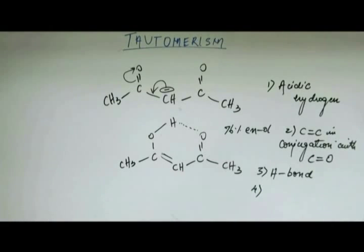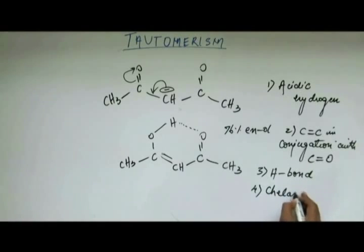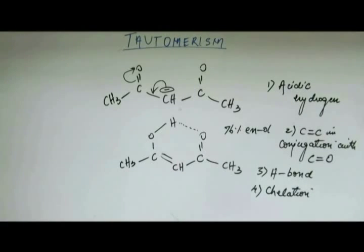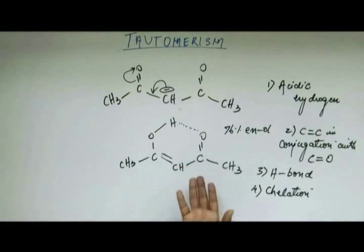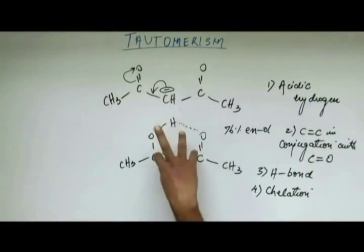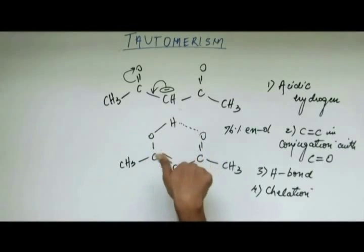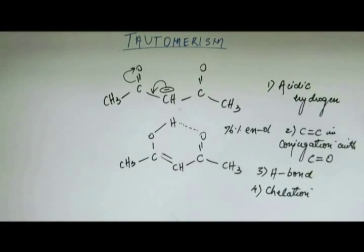The fourth thing we can see here is ring formation — there is chelation. If you've studied the chapter on coordination compounds in organic chemistry, you'll be familiar with the term chelation. Chelation simply means ring formation. Here there is chelation, meaning a ring is formed via hydrogen bonding. Previously in the keto form you did not have a ring, but when enol forms, you get a ring. Whenever you have a ring formation like this, some amount of stability is provided to the substrate.